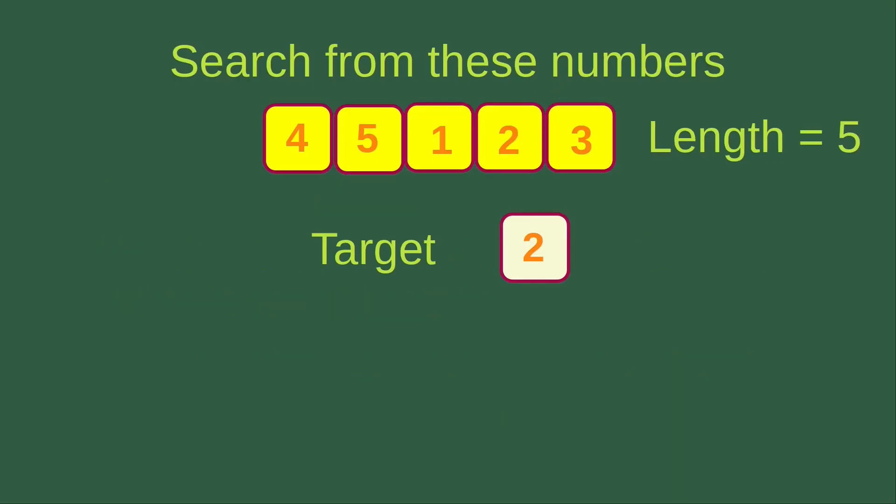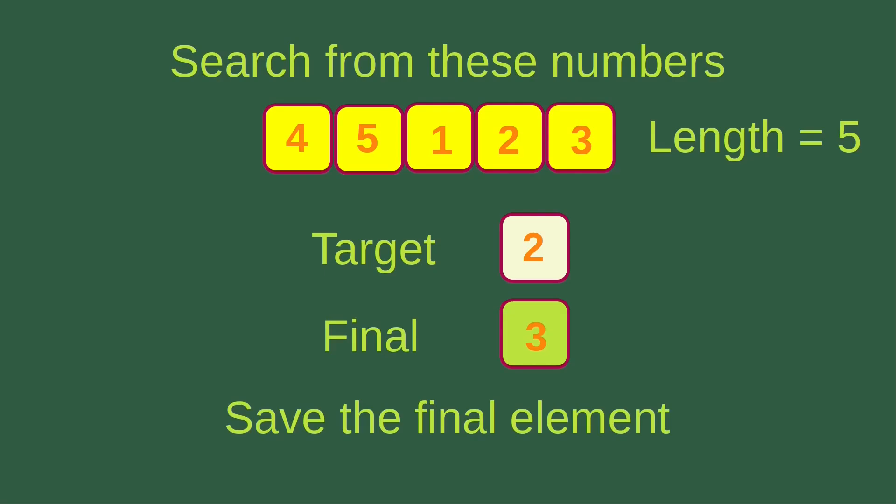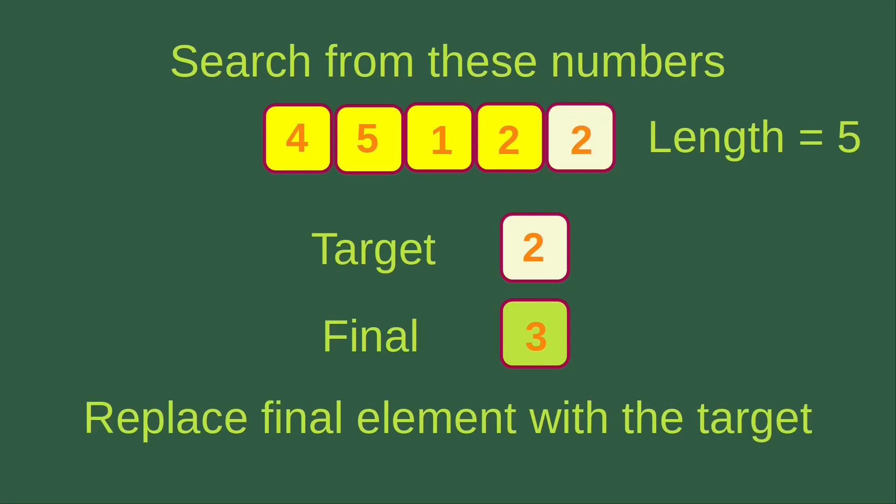Now let's look at the first case: the target can be found before the final element of the array. The length of the array is 5, and we want to find whether the target, which is number 2, is inside the array. The final element is 3, so we save number 3 to the final variable. Then we replace the final element with the target, so the final element of the array becomes number 2.